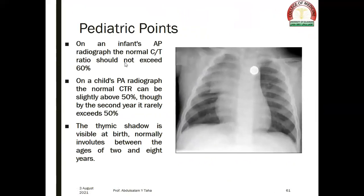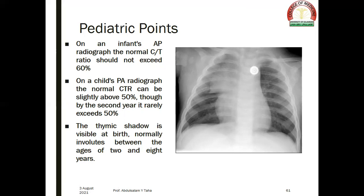In pediatric patients, on an infant's AP radiograph the normal cardiothoracic ratio should not exceed 60%. On a child's PA radiograph it can be slightly above 50%, though by the second year it rarely exceeds 50%. The thymic shadow is visible at birth and normally involutes between the ages of two and eight years. The mediastinal enlargement in this patient is due to a normal large thymus in an infant.